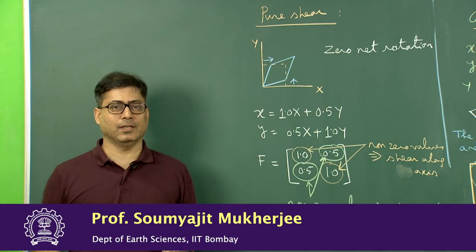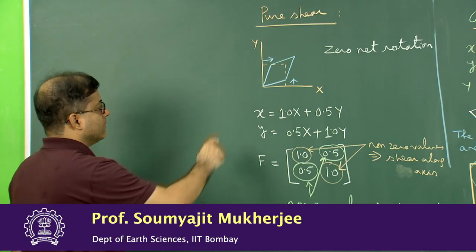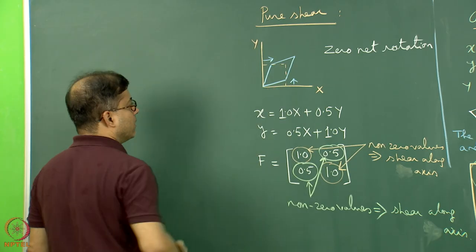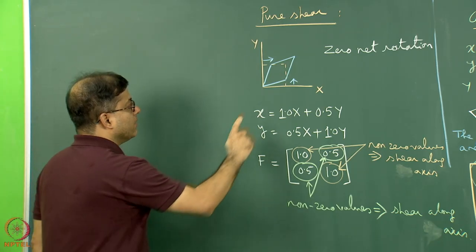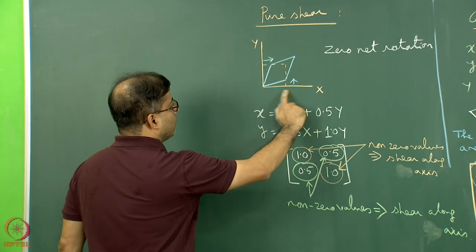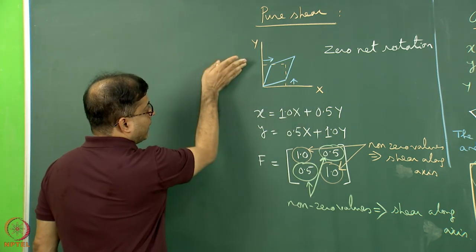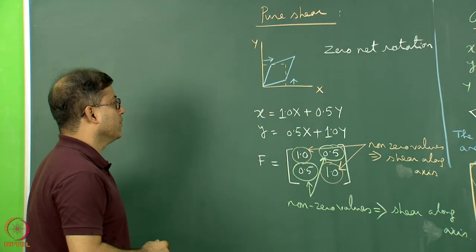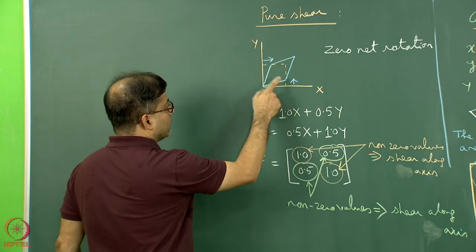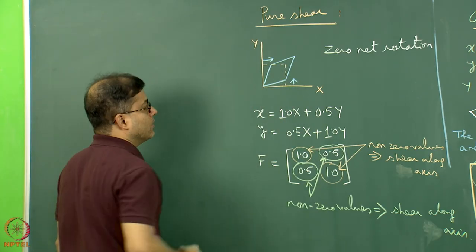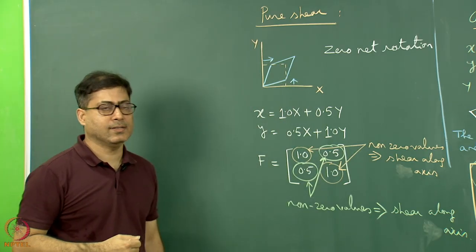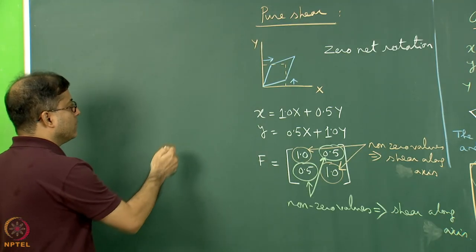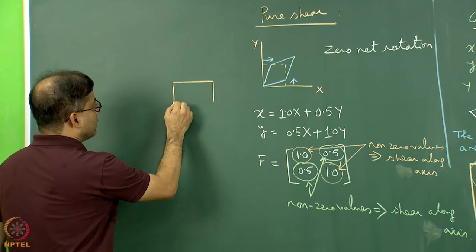Now let's look at pure shear deformation. The x-axis and y-axis are shown; the orange dashed rectangle is the starting configuration. A shear along the y-axis perpendicular to x-axis is given by one blue arrow, and along the x-axis perpendicular to y-axis by another blue arrow. With both shears applied, this rectangle takes a parallelogram geometry — called pure shear in mechanics books.